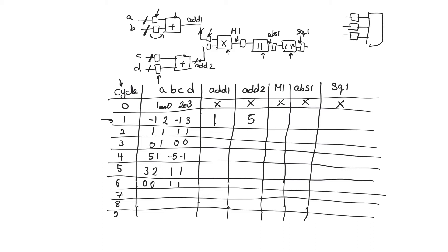So we will have one and five ready at add one and add two. As soon as the first clock edge came, data crossed these first registers and went through the first adders. They take some delay, and they are ready at nodes add one and add two before the second clock edge comes. At the same clock edge, the rubbish values that were in add one and add two will pass on to the multiplier M1, and those trash values will also propagate through the absolute circuit EPS1 and the square circuit.